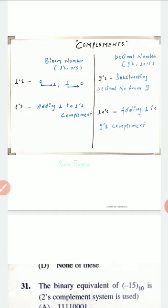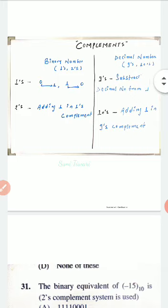Likewise, in the decimal number system we have nines complement and tens complement. For converting any decimal number to the nines complement, we need to subtract the particular number from nines. For example, if the number is 3, then we subtract it from 9. If the number is 222, then we take subtraction from 999.